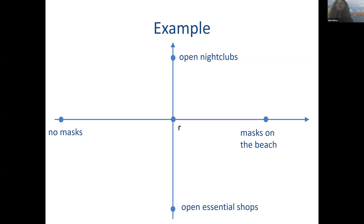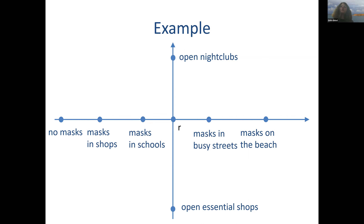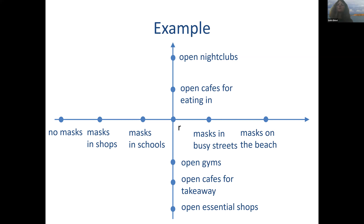Different voters have different ideal points in this two-dimensional space. For instance, voter one really hates masks — a proponent of no masks at all — but is relatively happy with keeping a lot of places closed, like cafes open just for takeaway. We've got the opposite: voter four says people should mask universally, but given masking, everything should be open. We see a variety of positions like that.